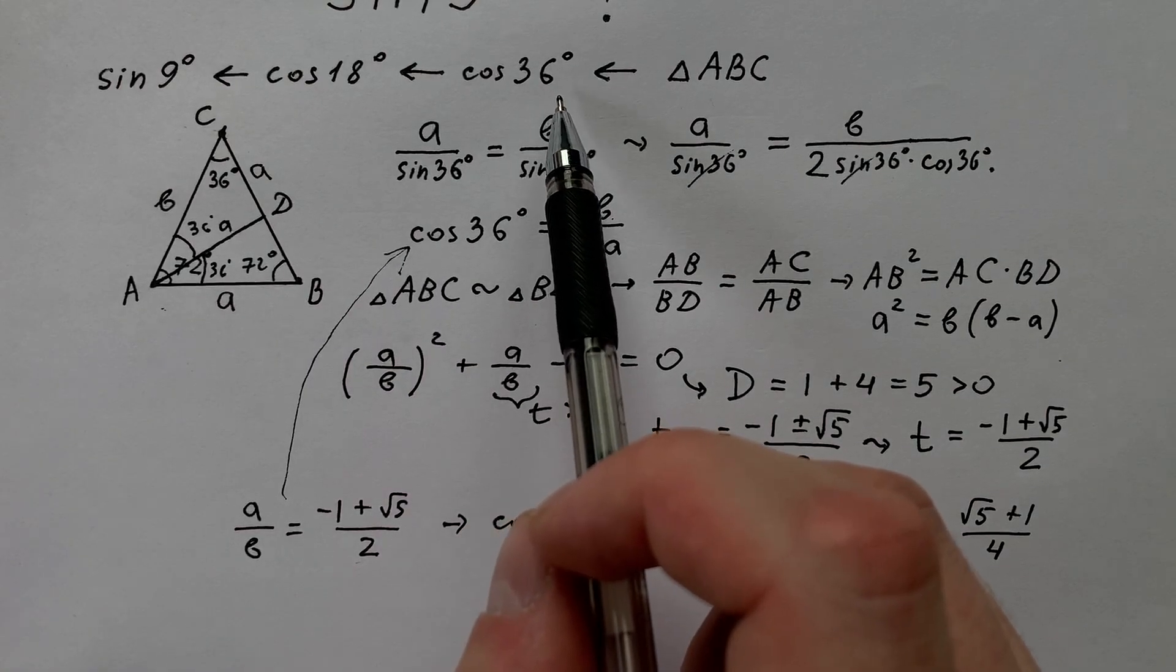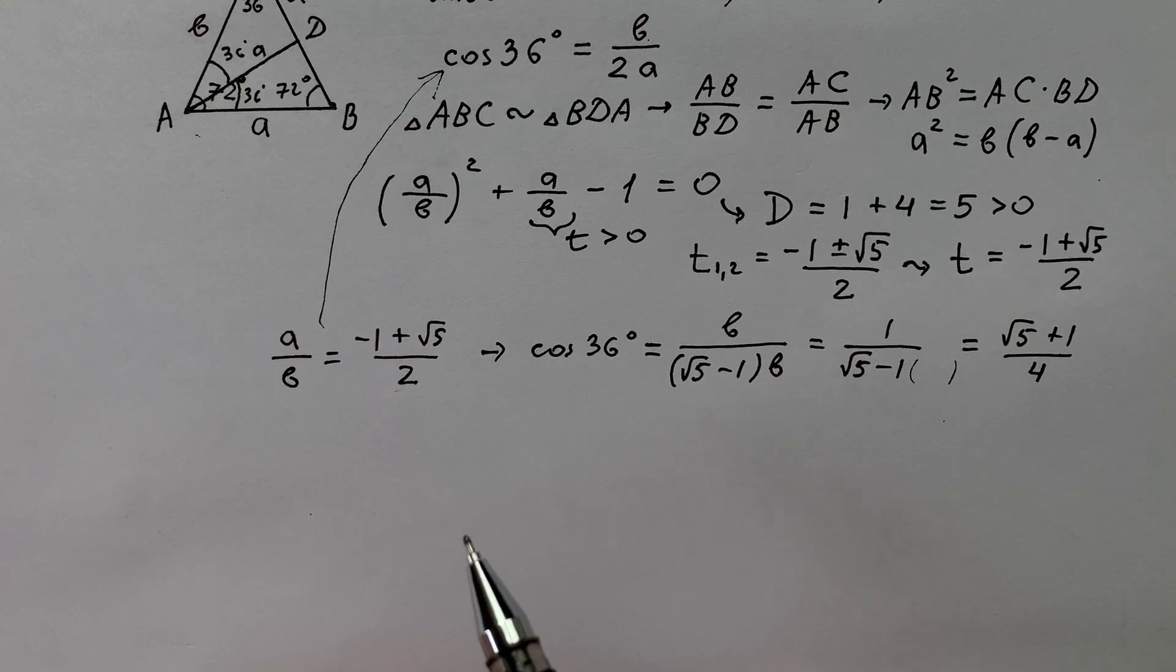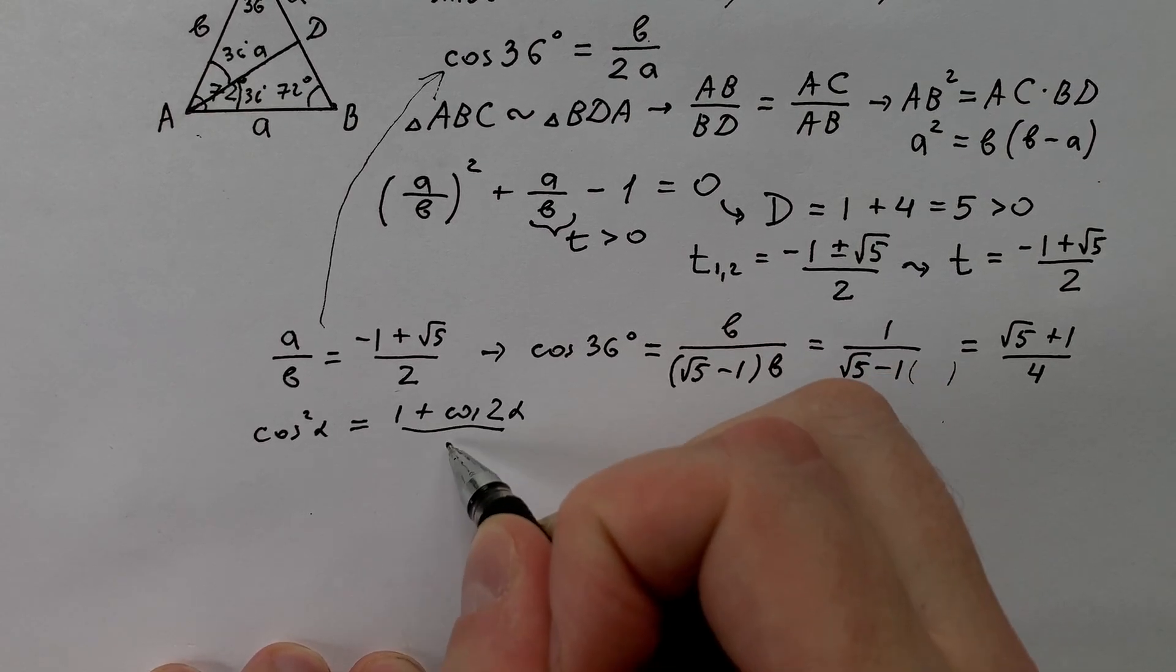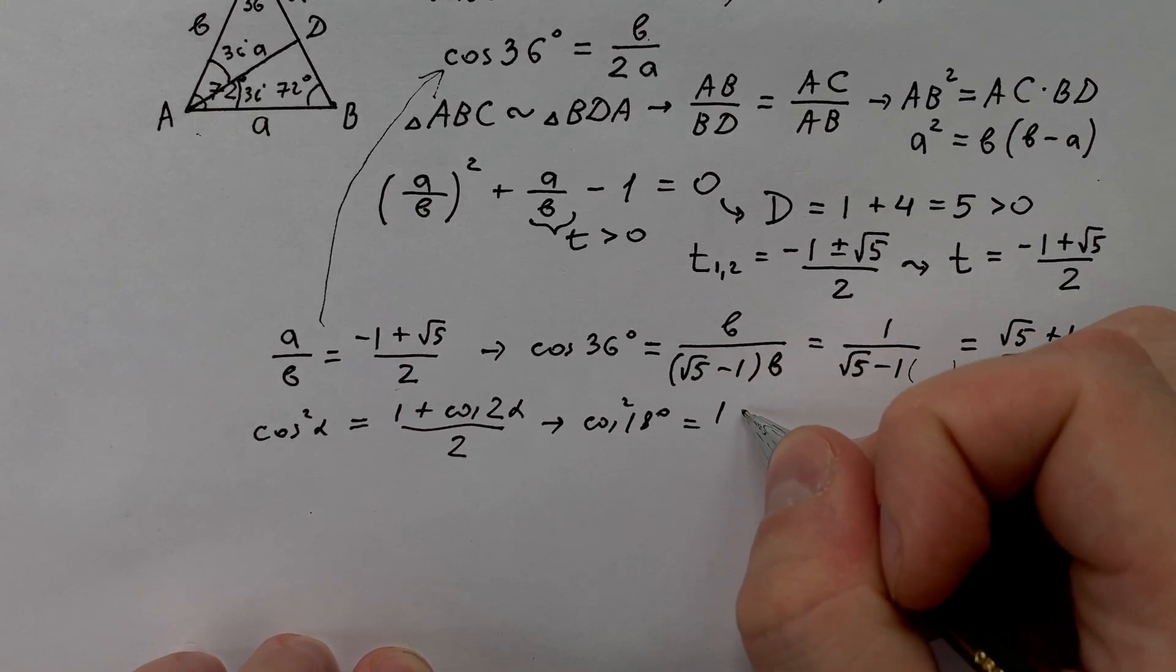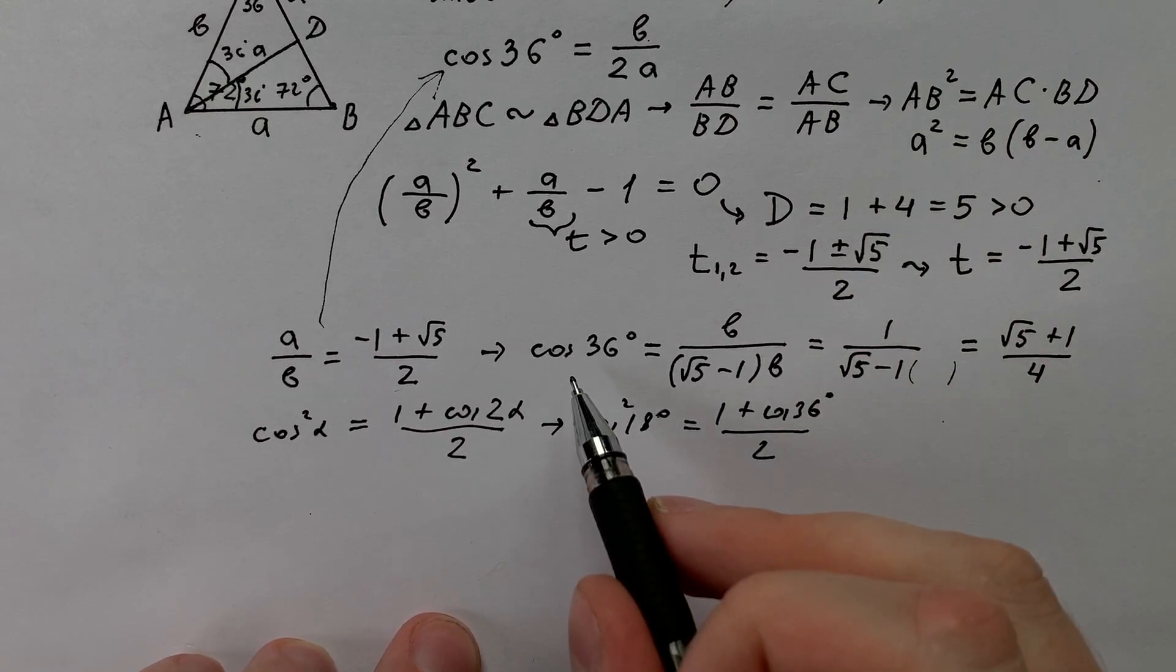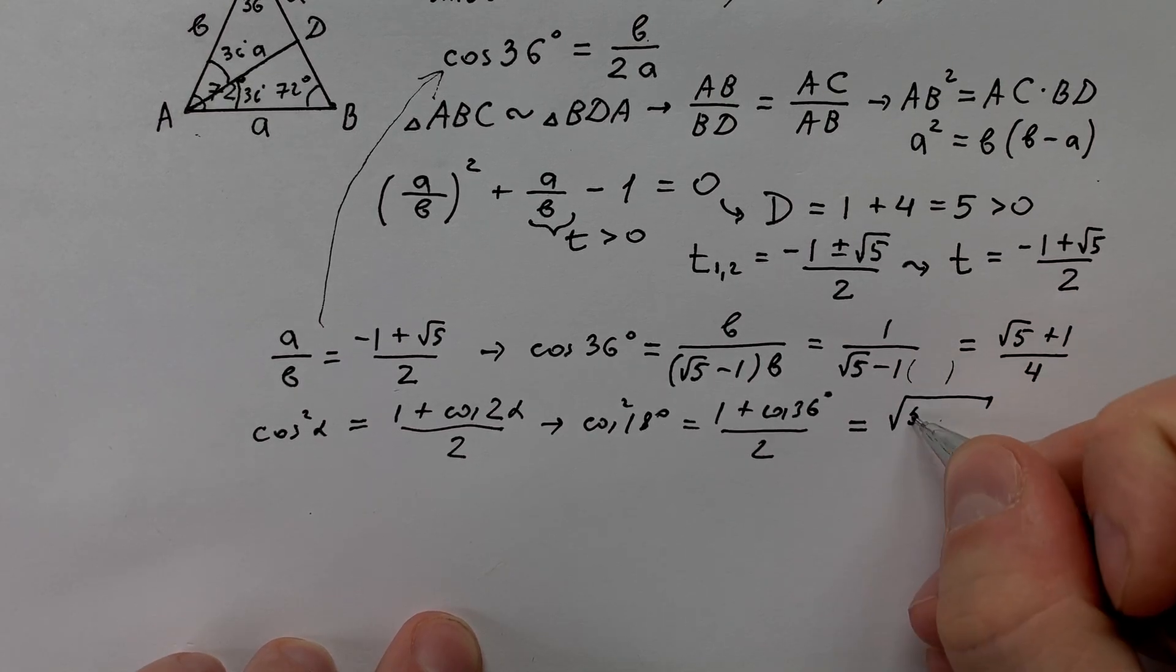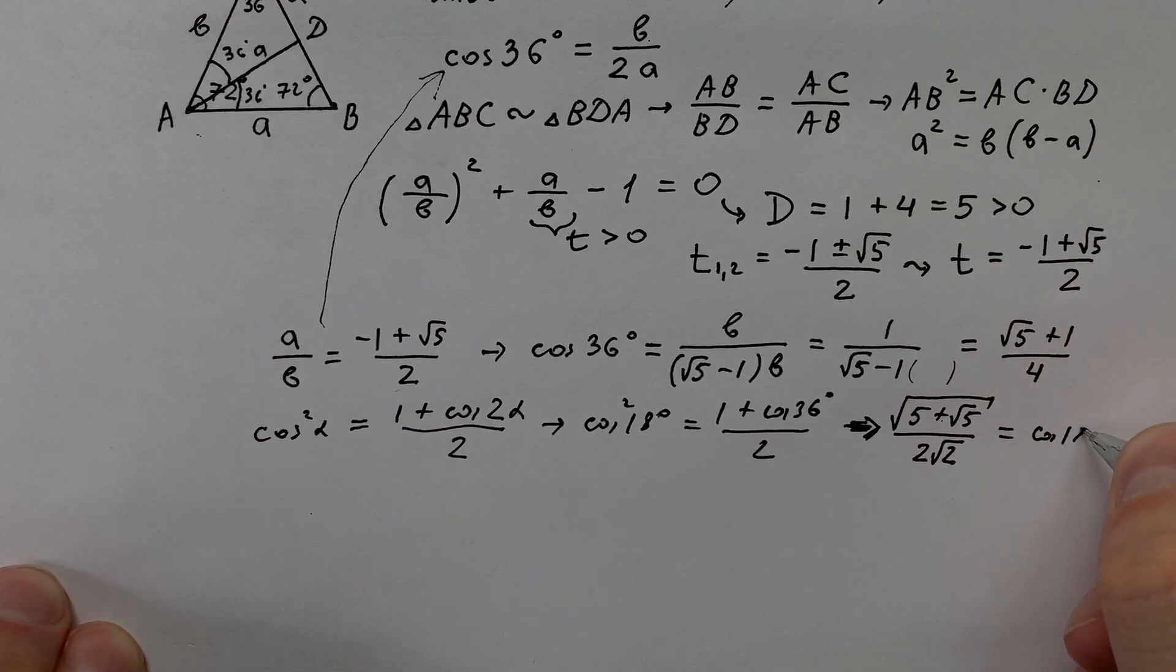But let's remember our initial strategy. From cosine 36 degrees we have to find cosine 18 degrees. So let's write to use a very famous trigonometric formula. Cosine squared alpha equals to 1 plus cosine 2 times alpha divided by 2. It means that cosine 18 degrees squared equals to 1 plus cosine 36 degrees divided by 2. Putting cosine 36 degrees into this equation and taking square root from both sides, we understand that it equals square root 5 plus square root 5 divided by 2 times square root 2. It is equals to cosine 18 degrees.